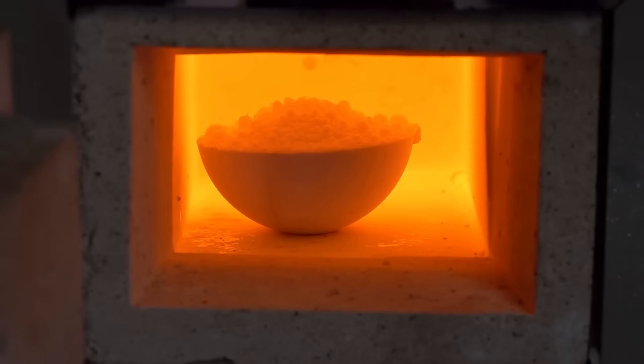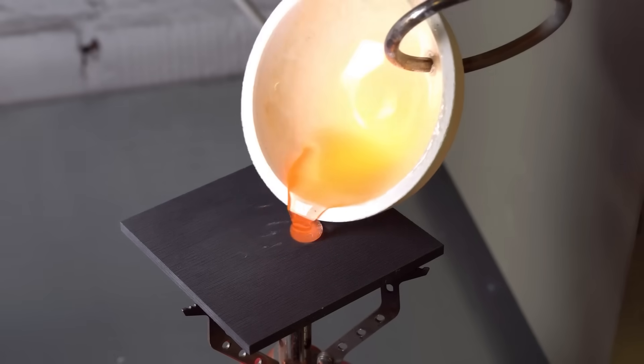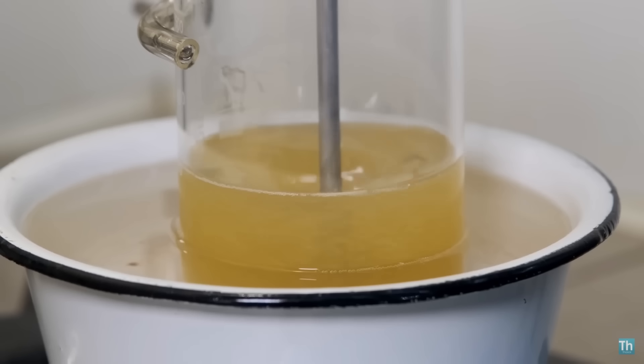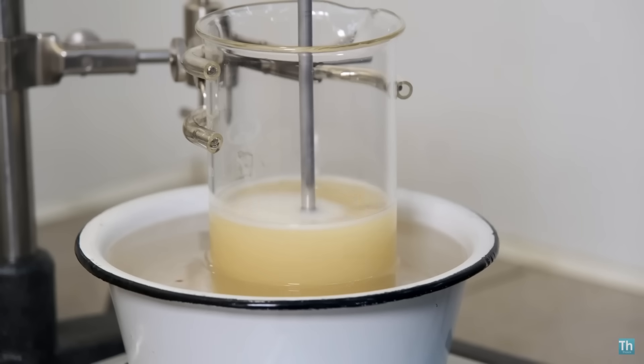The lightest of these metals turns out to be lithium, with a density of just 0.53 grams per cubic centimeter. Holding this piece of lithium in my hand, it's hard to believe that it's a metal. It feels just like a piece of light wood. Unlike potassium, lithium is much harder, which makes it difficult to cut with a knife.